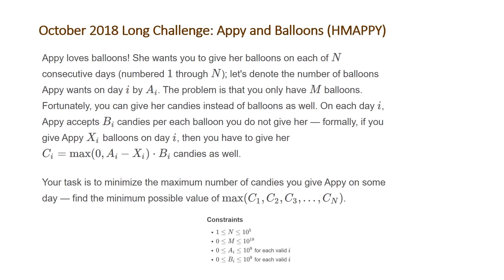The problem states Appy loves balloons. She wants you to give her balloons on each of n consecutive days numbered 1 through n. Let's denote the number of balloons Appy wants on day i by a_i. The problem is that you only have m balloons. Fortunately you can give her candies instead of balloons as well. On each day i, Appy accepts b_i candies per each balloon you do not give her. Formally, if you give Appy x_i balloons on day i, then you have to give her c_i which equals the maximum of zero and (a_i minus x_i) times b_i as the cost of the candies on that day.